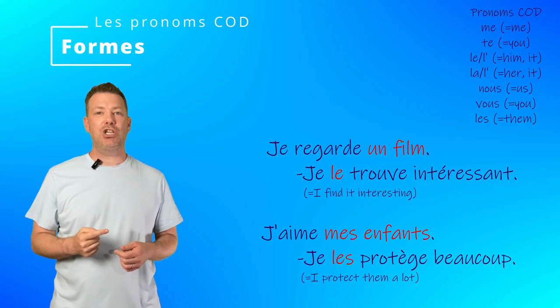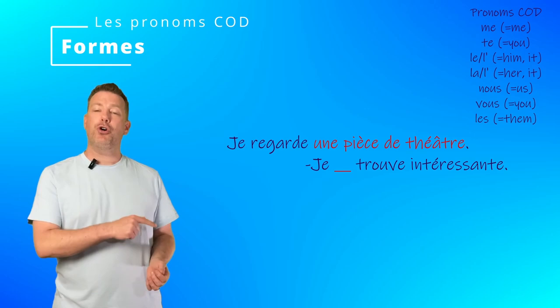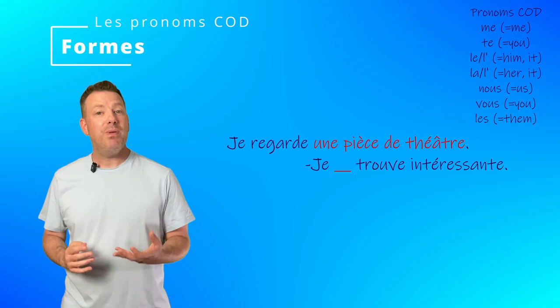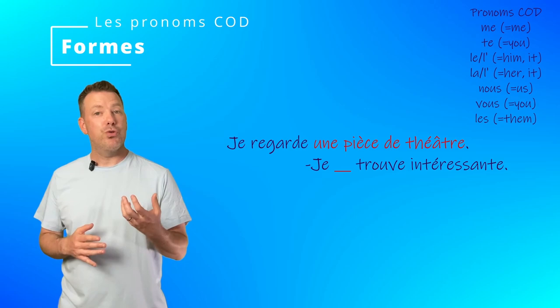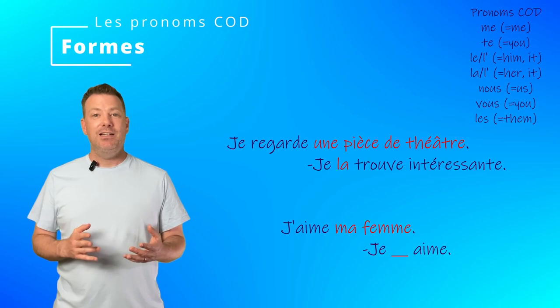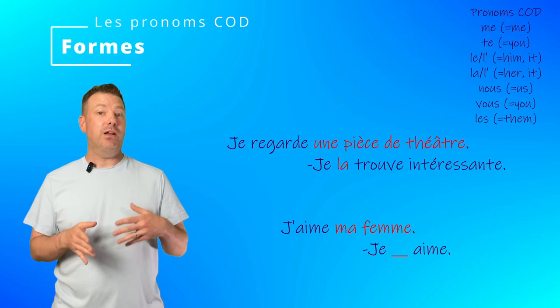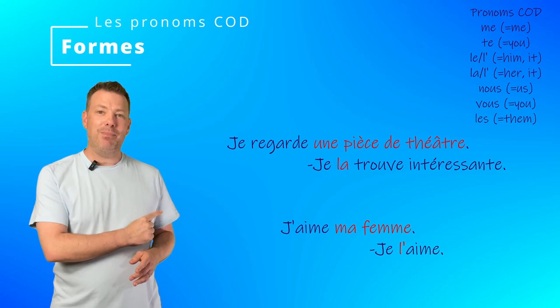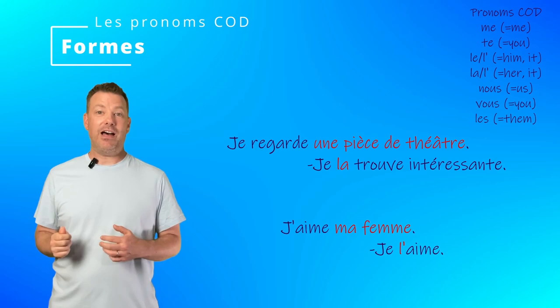Let's change our examples slightly. Je regarde une pièce de théâtre. The C-O-D is une pièce de théâtre and is now feminine, so I will use the la pronoun: Je la trouve intéressante. For people: j'aime ma femme. Ma femme is the C-O-D and is feminine and singular, so I also use la. Je l'aime — and notice the elision because aime starts with a vowel, so you use l'apostrophe. Je l'aime.